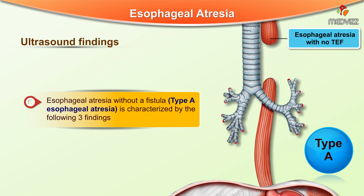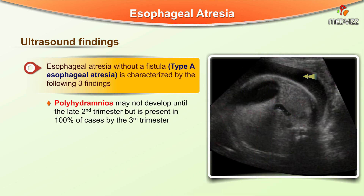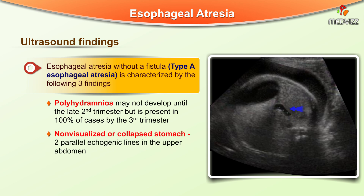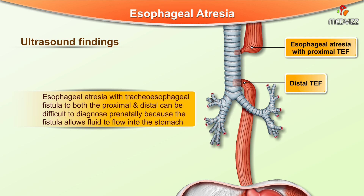On ultrasound, esophageal atresia without a fistula — type A — is characterized by the presence of polyhydramnios, which may not develop until the late second trimester but is present in about 100% of cases by the third trimester. A non-visualized or collapsed stomach can be appreciated as two parallel echogenic lines in the upper abdomen, and a dilated proximal esophageal pouch can be seen in the neck or mediastinum. Esophageal atresia with tracheoesophageal fistula to both the proximal and distal segments can be difficult to diagnose prenatally because the fistula allows fluid to flow into the stomach.